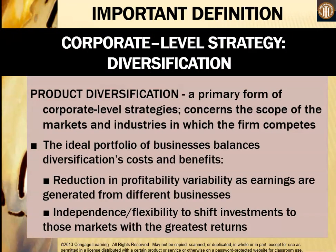Product diversification is a primary form of corporate strategy — it concerns the scope of the markets and industries in which the firm competes. The ideal portfolio of businesses balances diversification costs and benefits. These benefits include reduction in performance variability as earnings are generated from different businesses, and independence and flexibility to shift investments to markets with greater returns. So if one company within the group is not doing well but another is, the firm can shift investments to the one earning above-average returns.